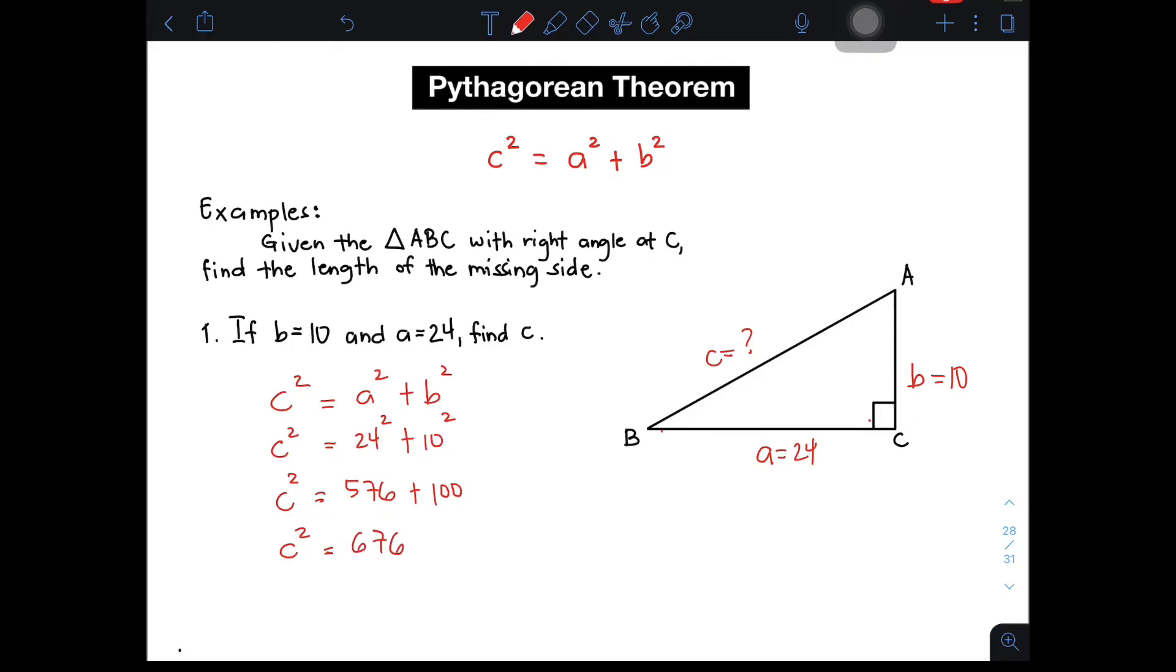This will give us C squared is equal to 676. And, ang target natin ngayon, is to get the value of C, in which we need to get the square root of C squared. So, square root of C squared is simply C. And, the square root of 676 is simply 26. Since wala tayong specific unit, we will be using units in general. So, the correct answer or the length of the hypotenuse is simply 26 units.